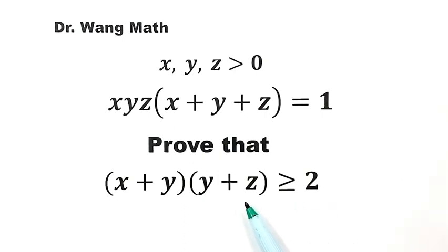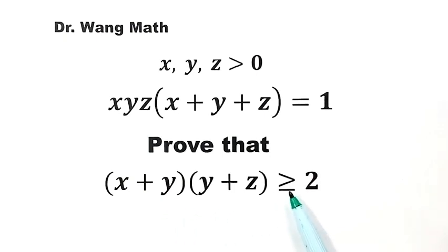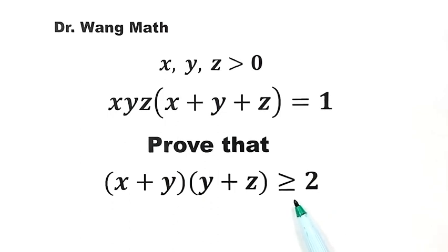Proving this inequality includes two parts. First, we need to prove the product is bigger than or equal to 2. Then the second part, we need to prove 2 is reachable — so equality is true. Now let's get started.